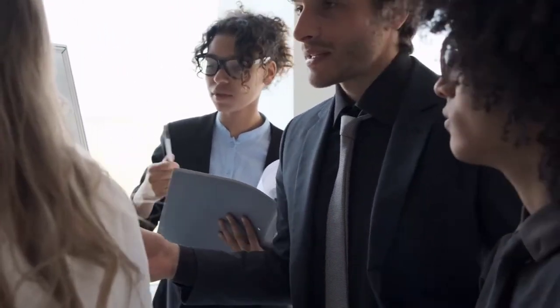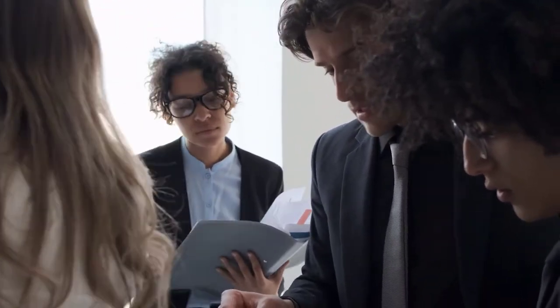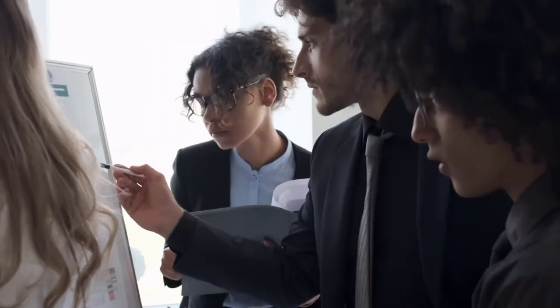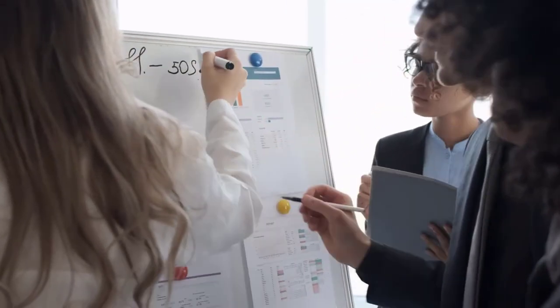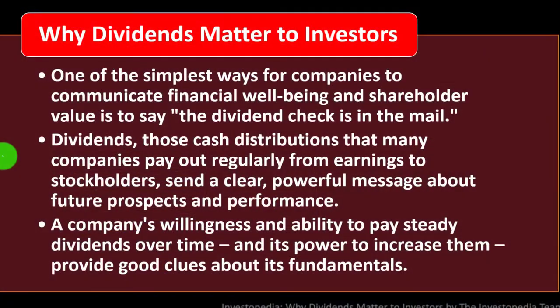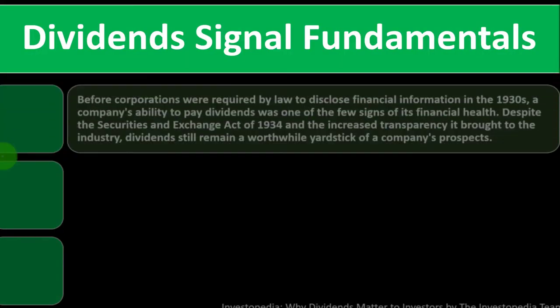Companies are generally cautious about increasing dividends because they don't want to pull them back. If dividends decrease, that gives investors the opposite signal. Usually, if a company is going to increase dividends, they signal to shareholders that they can sustain the increase going forward, because decreasing dividends could be a negative signal. Dividends, in short, signal fundamentals.